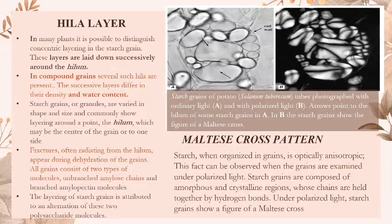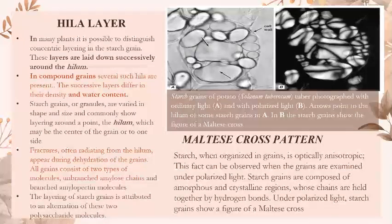In many plants it is possible to distinguish concentric layering in the starch grain laid down successively around the hilum. In compound grains, several such hila are present. Starch is optically anisotropic and under polarized light shows a Maltese cross pattern.